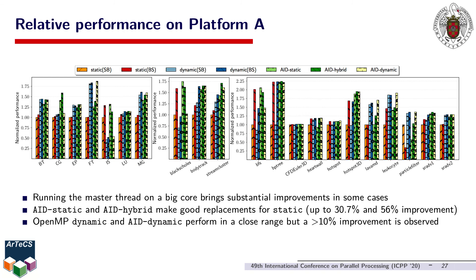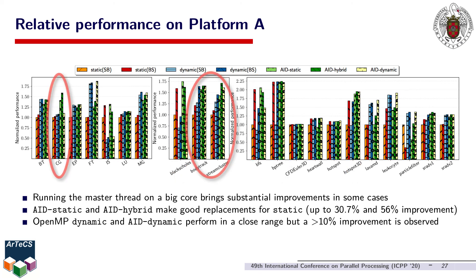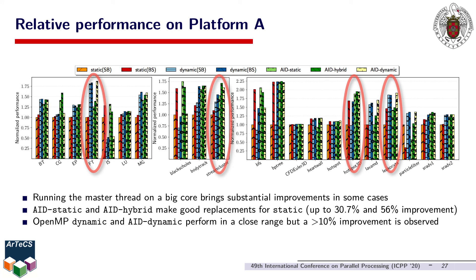We begin by analyzing the results obtained on Platform A using the default chunk and parameter values for all loop scheduling methods. The results reveal that in some cases, the benefit observed over the baseline — static with SB mapping — comes primarily from running the master thread on big cores, which allows the acceleration of explicit sequential sections. As for benchmarks with parallel loops where iterations have a similar amount of work, AID-static and AID-hybrid clearly outperform static and deliver up to 30.7% and 56% performance improvements respectively. In many other cases, scheduling iterations dynamically clearly seems the way to go. In these scenarios, Dynamic and AID-dynamic bring the best results, and although they perform in a close 1% range for many programs, AID-dynamic is still capable of delivering up to 16.8% performance improvement over Dynamic.